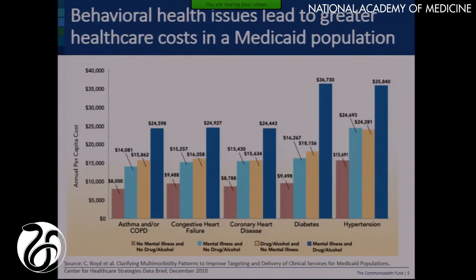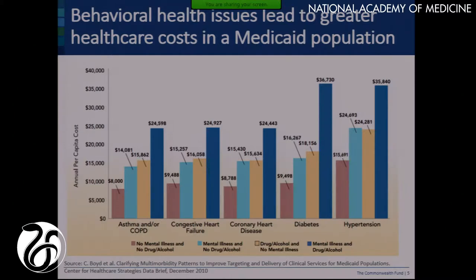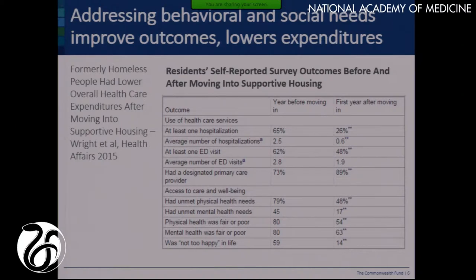A lot of people have talked about the role and importance of behavioral health and social service needs. This data from Cynthia Boyd — a CHCS publication — confirms it. Someone earlier talked about the multiplicative effect on costs when you start talking about behavioral health. There is a difference between anxiety disorders or depression that persisted in mental health and substance abuse, and you can see when you have both how much more cost is incurred. When we start addressing social determinants such as supportive housing, we see a lot of unnecessary utilization drop, as shown in a paper this month in Health Affairs.